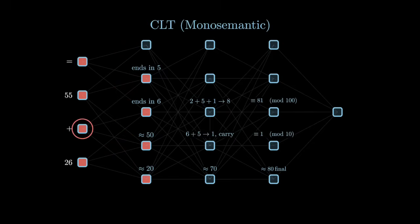In the second layer, since the model begins to refine the computation, one feature may detect that 6 plus 5 results in 11 and trigger a carrier to the next digit. Another feature may detect that 2 plus 5 plus the carried one equals 8, and the other one detecting that the answer may be around 70.